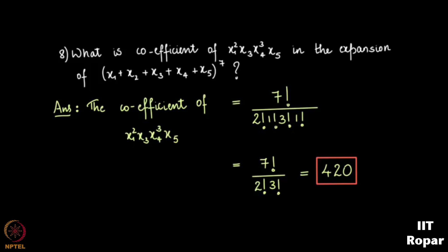These were some problems on binomial and multinomial coefficients. We have covered binomial theorem, multinomial theorem, how to find a specific rth term, how to find the middle term, and solved several problems. We will move on to the next concept in the next video. If you have any doubts, please post on the discussion forum.